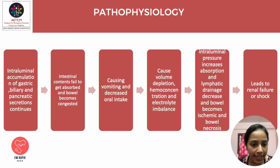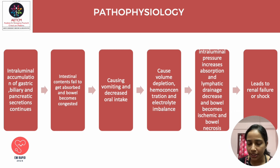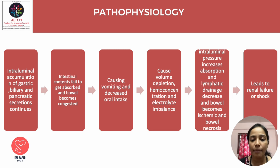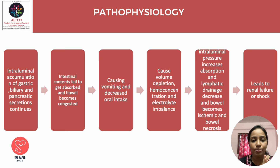In the pathophysiology of intestinal obstruction, when there is a bowel obstruction, there is intraluminal accumulation of gastric, biliary, and pancreatic secretions. The intestine fails to absorb these contents, the bowel becomes congested, leading to vomiting and decreased oral intake. This results in volume depletion, hemoconcentration, and electrolyte imbalance. Intraluminal pressure increases, absorption and lymphatic drainage decrease, the bowel becomes ischemic, and finally progresses to bowel necrosis, leading to renal failure and shock.